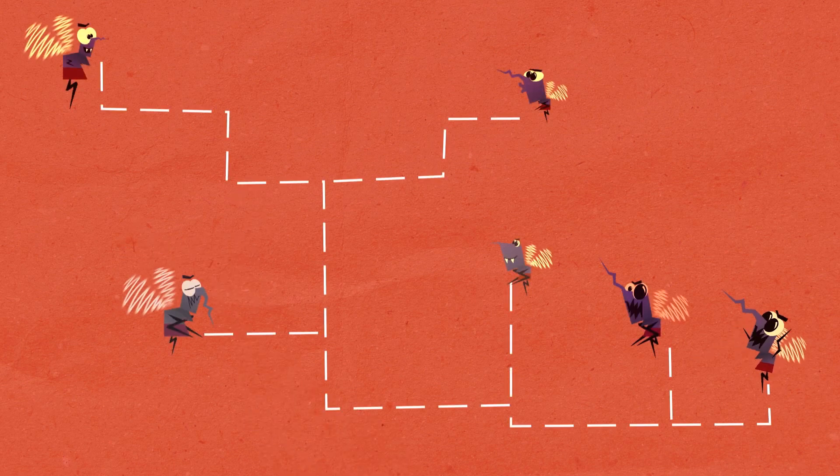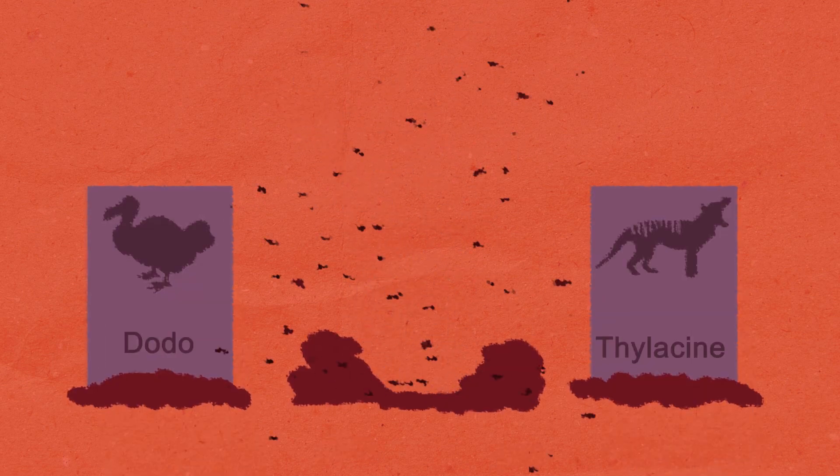So if these bugs are so dastardly, why don't we just get rid of them? We are humans, after all, and we're pretty good at getting rid of species. Well, it's not quite so simple.